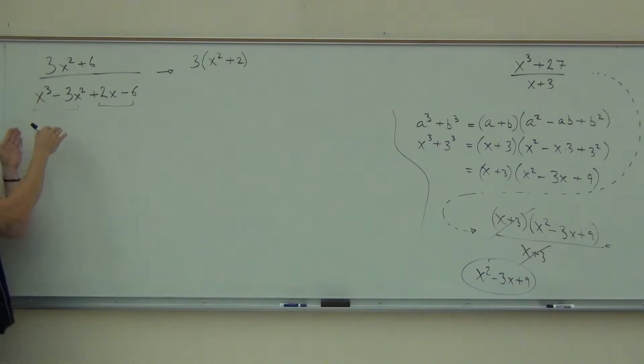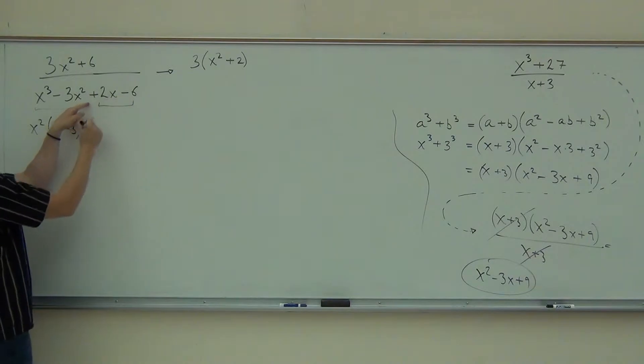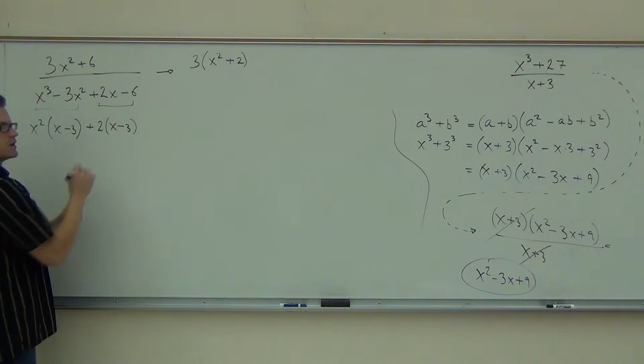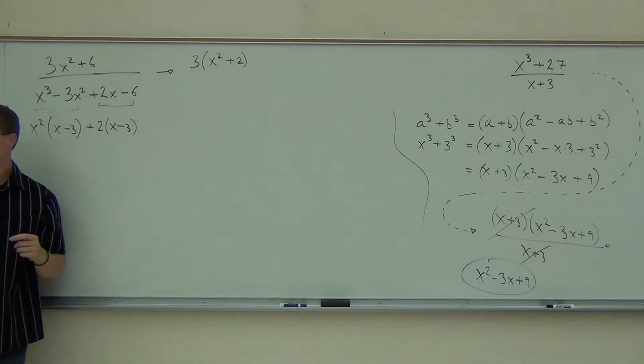So you factor by grouping the first two and the second two. What factors out of the first two, please? X squared plus squared. And we're going to get x minus three. Out of here, we have a positive, so we're factoring a positive. Two, and we get x minus three. Does it look like it's going to work for us? Yes.